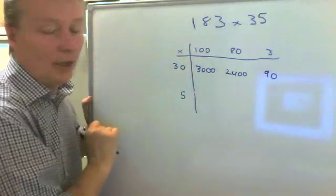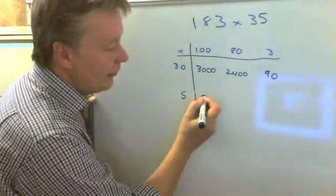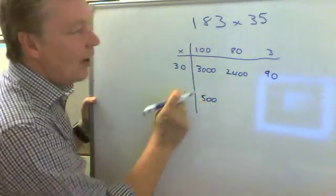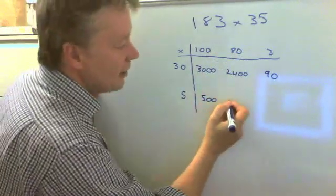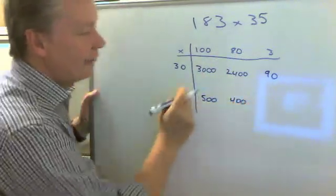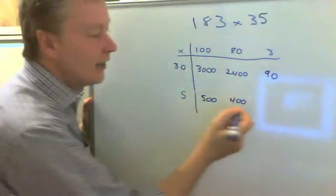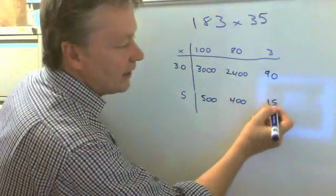So 5 multiplied by 100 is 500. 5 multiplied by 80 is 400. 5 multiplied by 3 is 15. Okay.